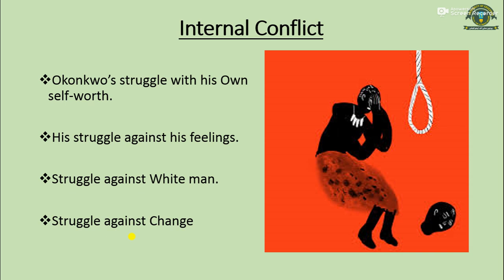At the end of the novel, Okonkwo struggles with himself about what to do now that his culture is doomed. He believes he will fight against the white man, but when he realizes how truly alone he is, he struggles with whether he can go on living and what the implications of killing himself would be. When his clan didn't support him it was the worst nightmare of Okonkwo, because he was doing everything for them. Ultimately all the conflicts — both outer and inner — led to the tragic death of Okonkwo, as he hanged himself.